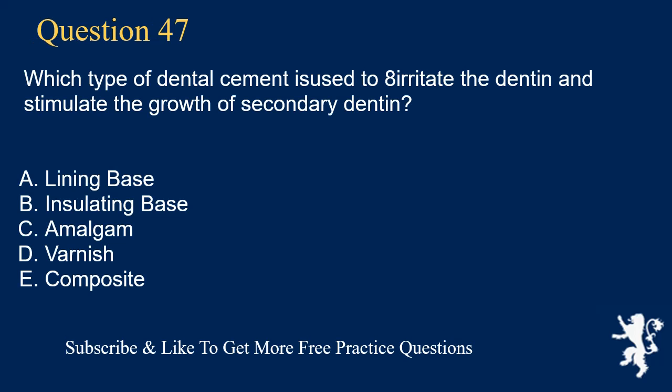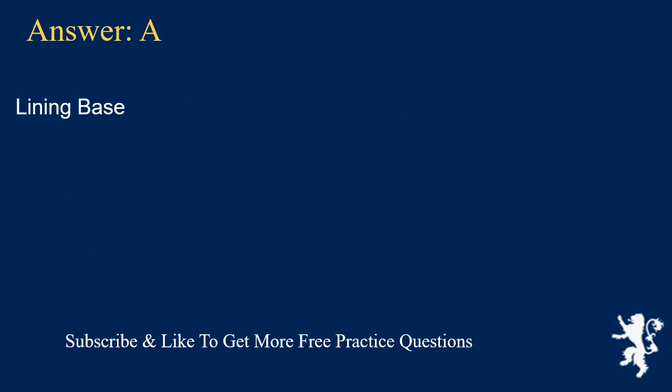Question 47. Which type of dental cement is used to mildly irritate the dentin and stimulate the growth of secondary dentin? A. Lining base, B. Insulating base, C. Amalgam, D. Varnish, E. Composite. Answer: A. Lining base.